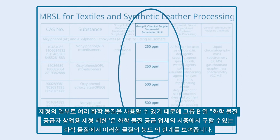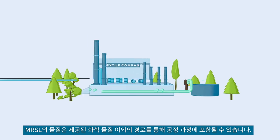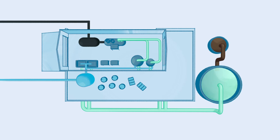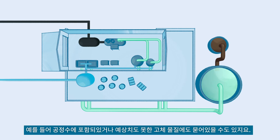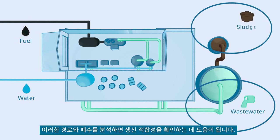Since you may use multiple chemical substances as part of formulations, the Group B column — Chemical Supplier Commercial Formulation Limit — shows the concentration limits of such substances in commercially available chemical formulations from chemical suppliers. Substances on the MRSL may also enter the factory through pathways other than the supplied chemicals, for example as contaminants in process water or input materials.